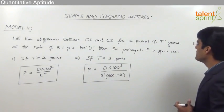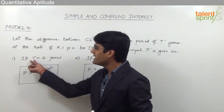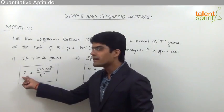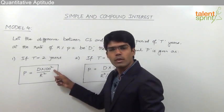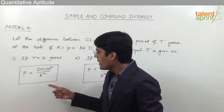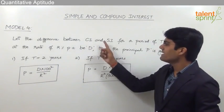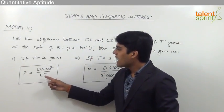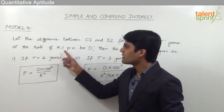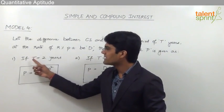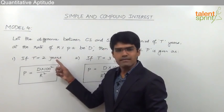We have two different cases here. The first case is if time is equal to 2 years, then the principal P can be calculated as D into 100 squared divided by R squared, where D is the difference between compound interest and simple interest and R is the rate of interest per annum. Remember, this formula is applicable when the time period is given as 2 years.